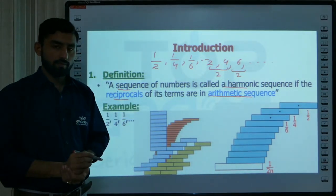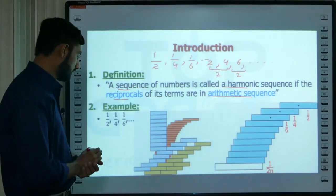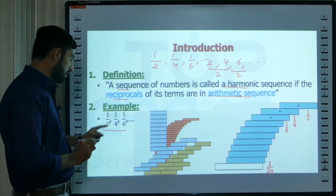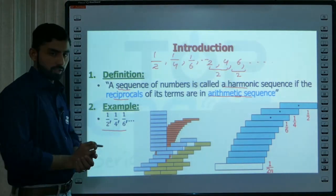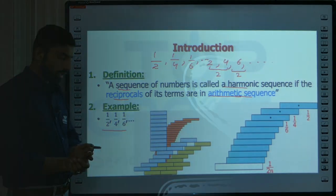This will lead us to the harmonic sequence or harmonic progression. As discussed here, the example is 1 over 2, 1 over 4, and 1 over 6. This is harmonic progression. Why is it harmonic progression?